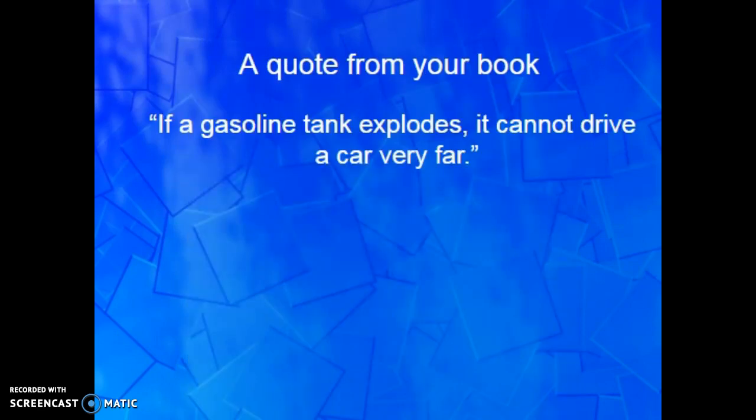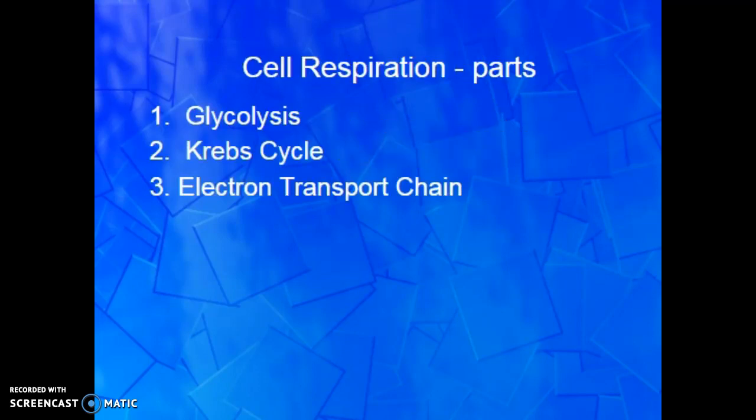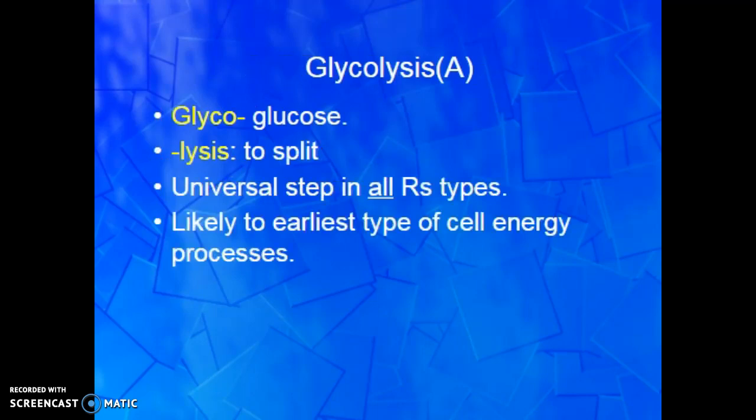If a gas tank explodes, it can't drive very far. There certainly are better ways to harvest energy, but we can control the explosion — it's not one massive explosion. It's like the way your car works: we're still combusting, just not exploding the whole gas tank at once. We've got a controlled release so we can harvest energy out of that. Our three parts to cellular respiration are glycolysis, the Krebs cycle — which has about 75 different names — and the electron transport chain. Let's dive into glycolysis.